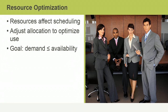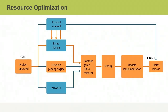Resource optimization can also involve increasing the estimated duration of an activity because of a resource constraint — for example, based on the earliest date when required equipment can be delivered. Resource optimization is all about moving resources from non-critical to critical activities and can help reduce a project's total planned duration.